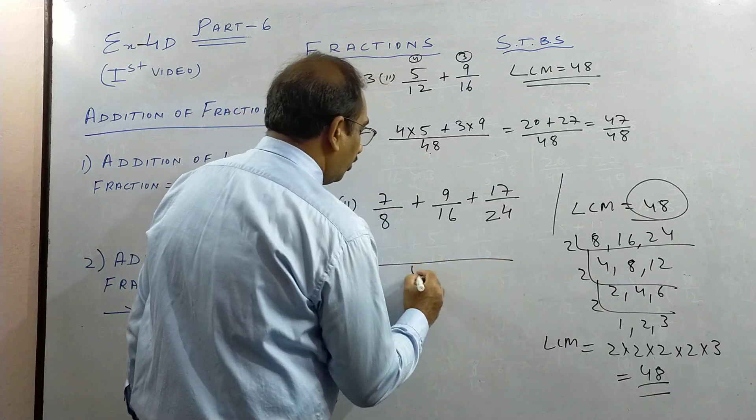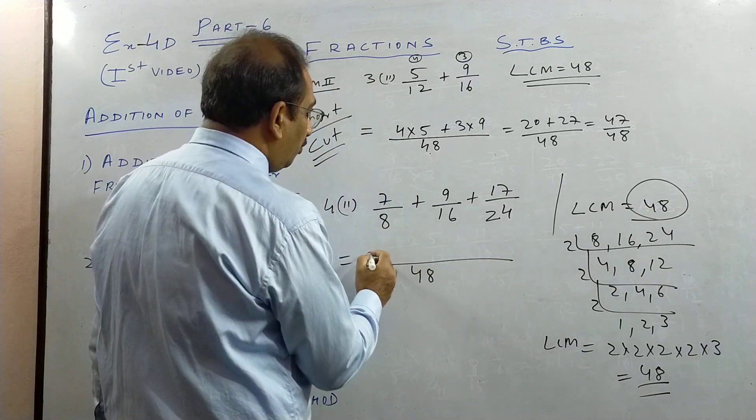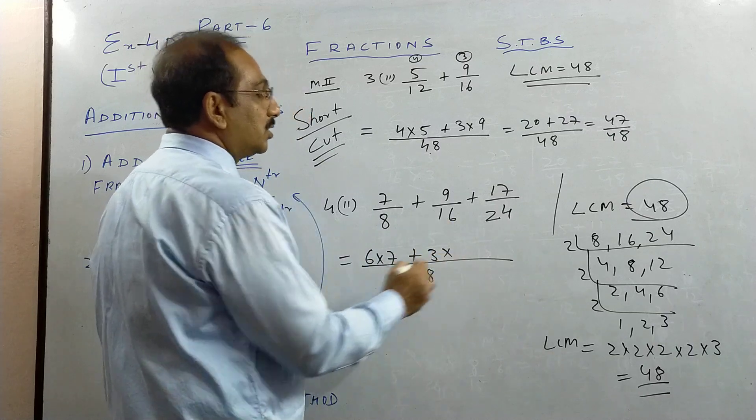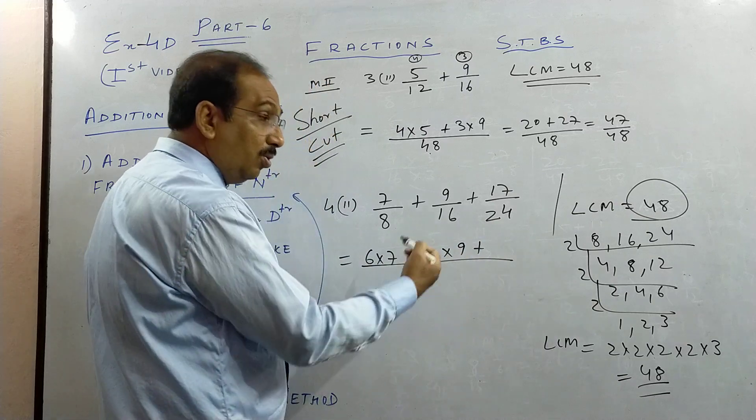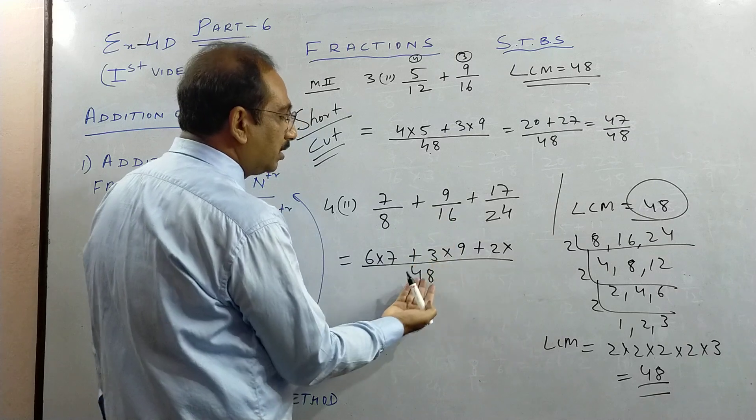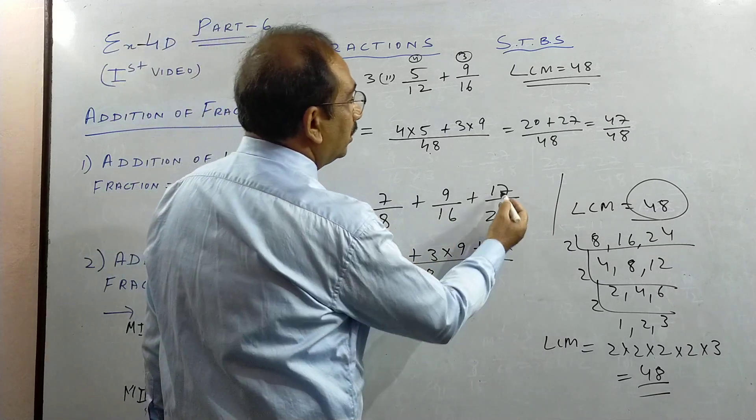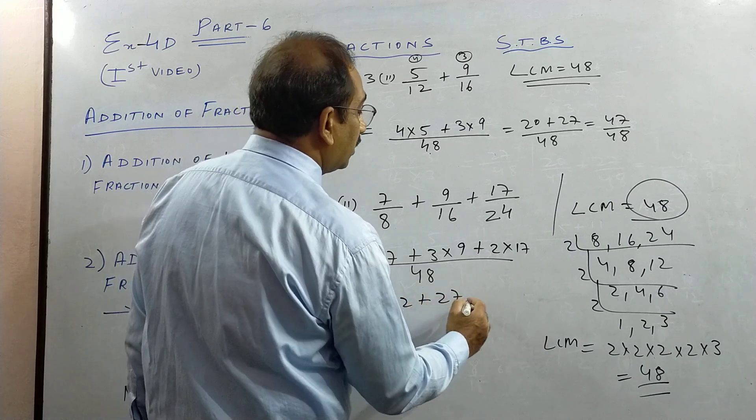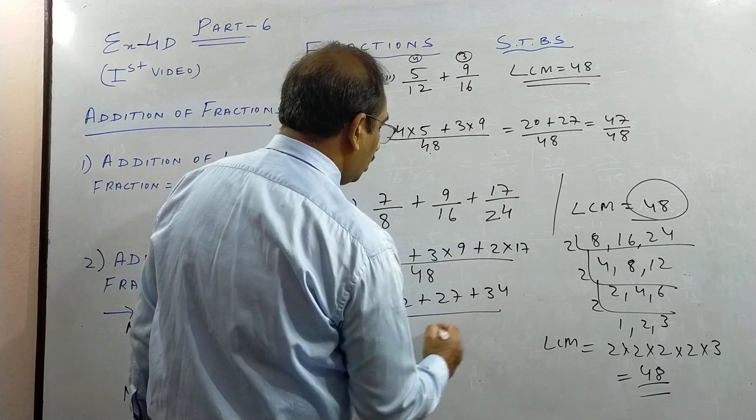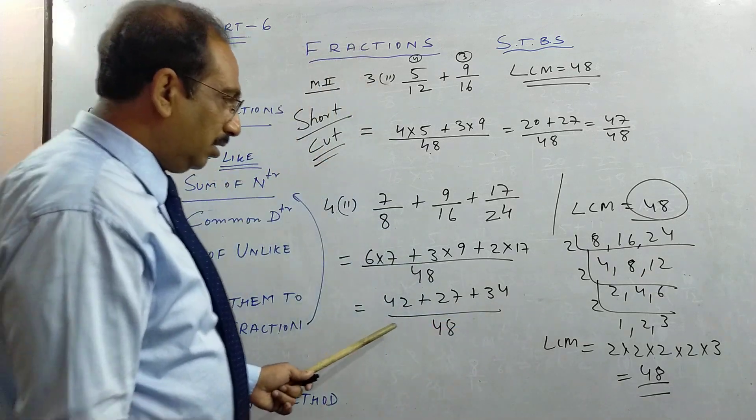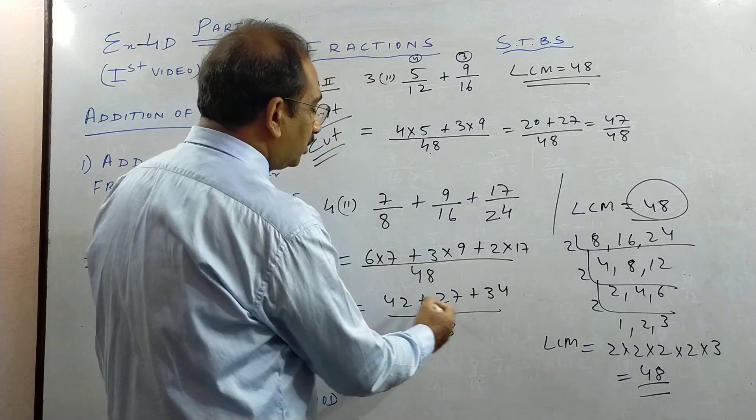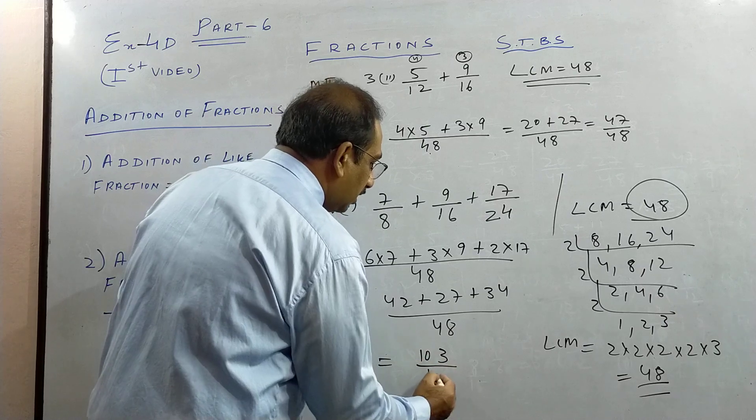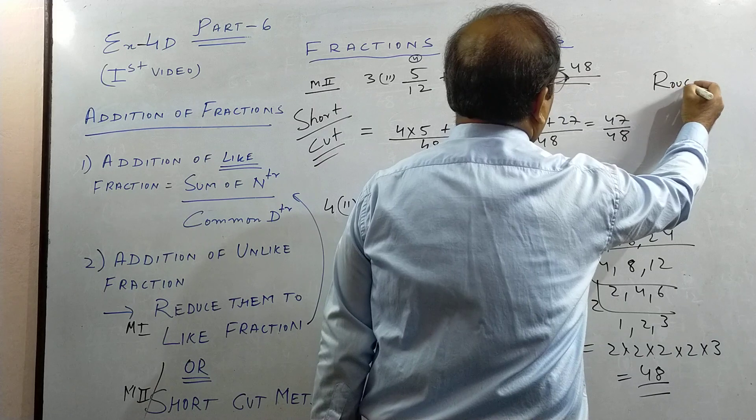Now you see 48 is the LCM. See, 8 will go 6 times. So 6 into 7. 16 will go 3 times. So 3 into 9. 24 will go 2 times. Divide this over this you get 2, divide this over this you get 3, divide this over this you get 6. So this 7 will be multiplied by 6. So we get 6 times 7 is 42 plus 9 times 3 is 27 plus 17 times 2 is 34 by 48. Then we add all this. How much you get? 4, 7, 11, 13, 1, 4, 6 and 4 is 10. So 103 by 48.